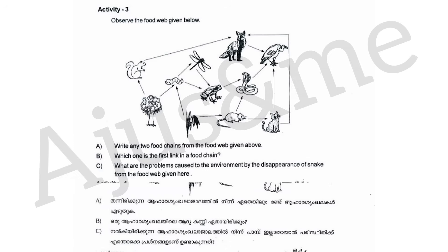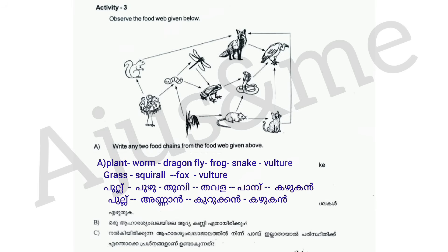The food chain is: plant → worm → dragonfly → frog → snake → and eagle. The grass → squirrel → fox → and eagle.